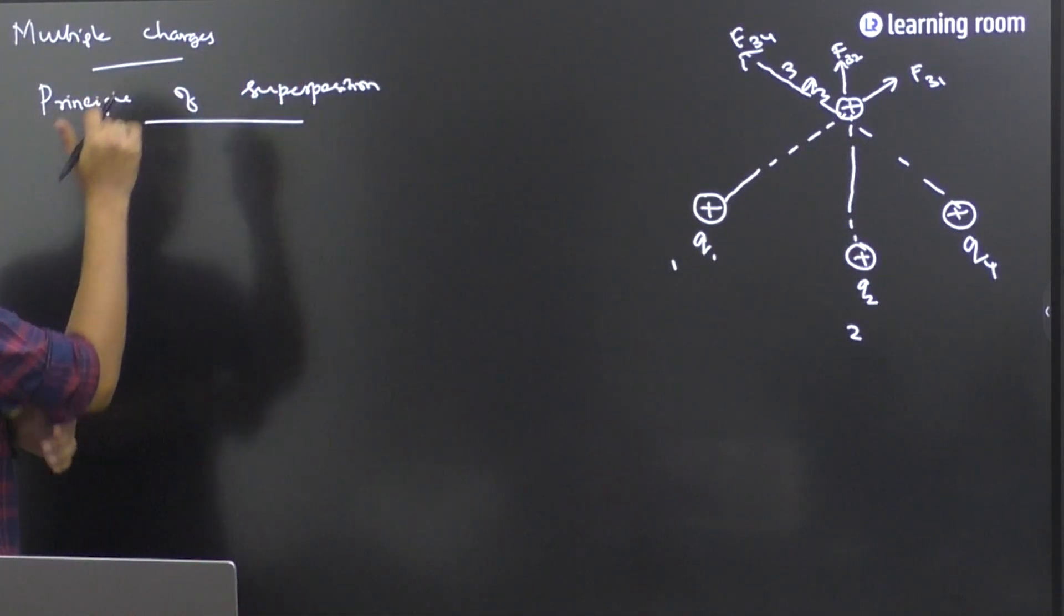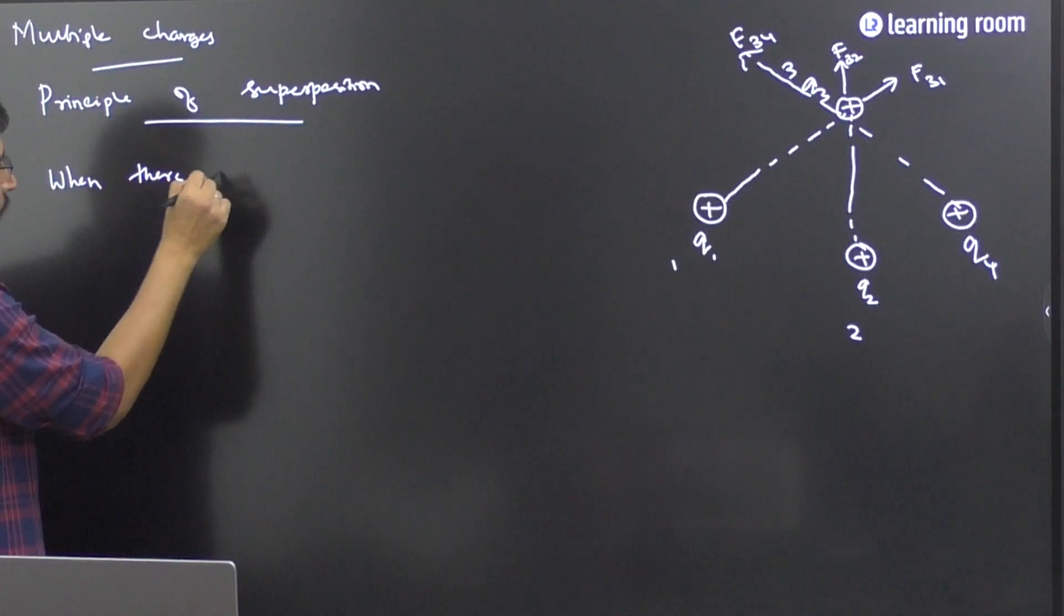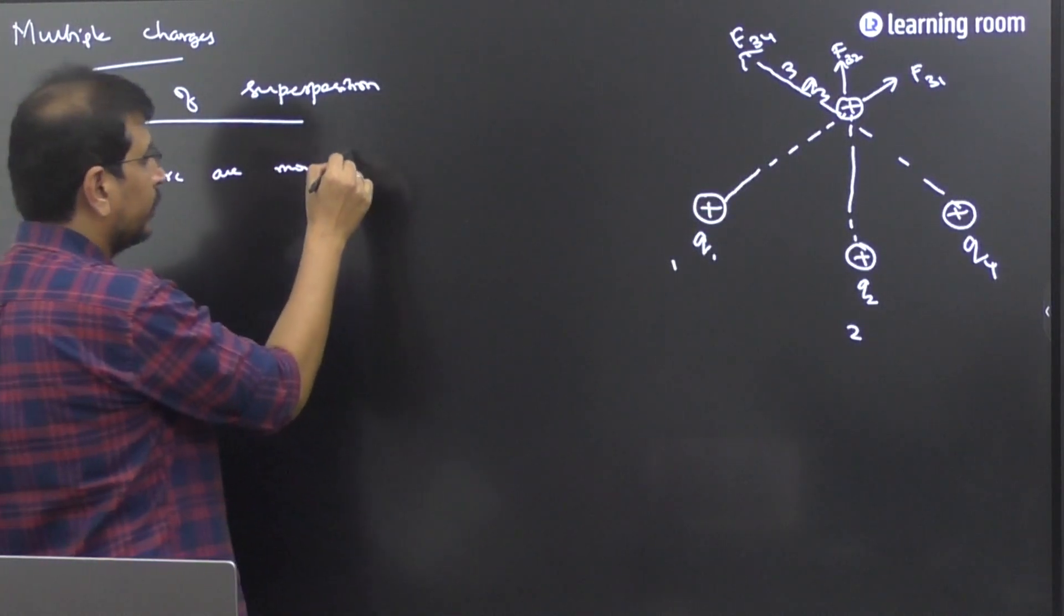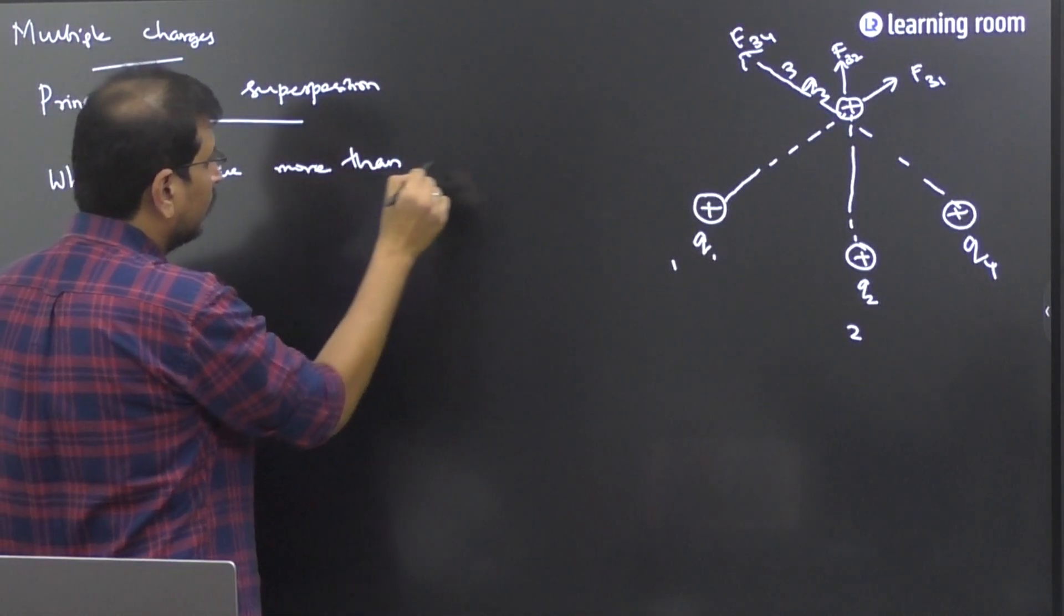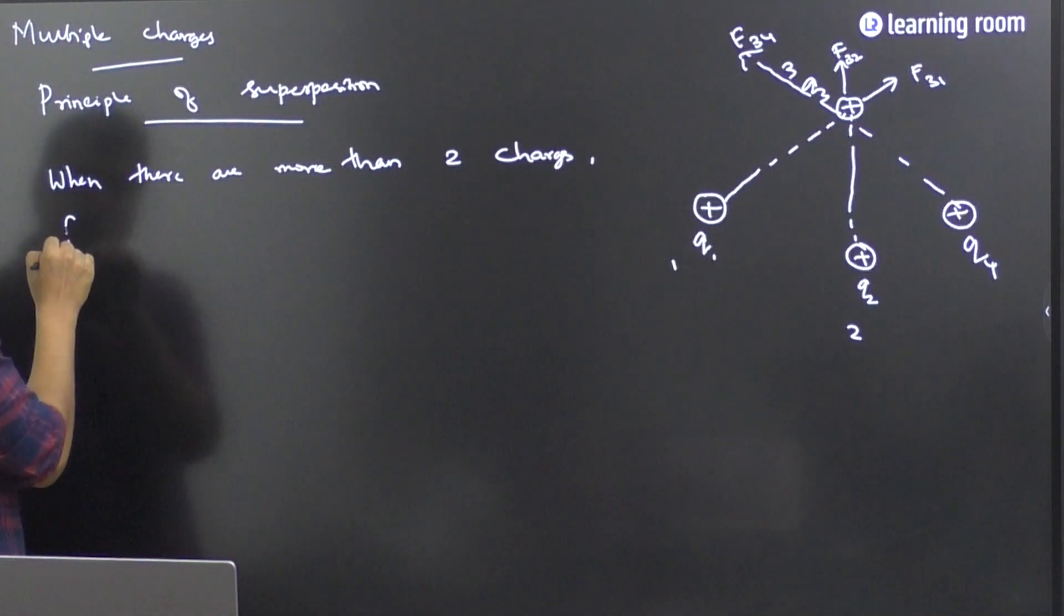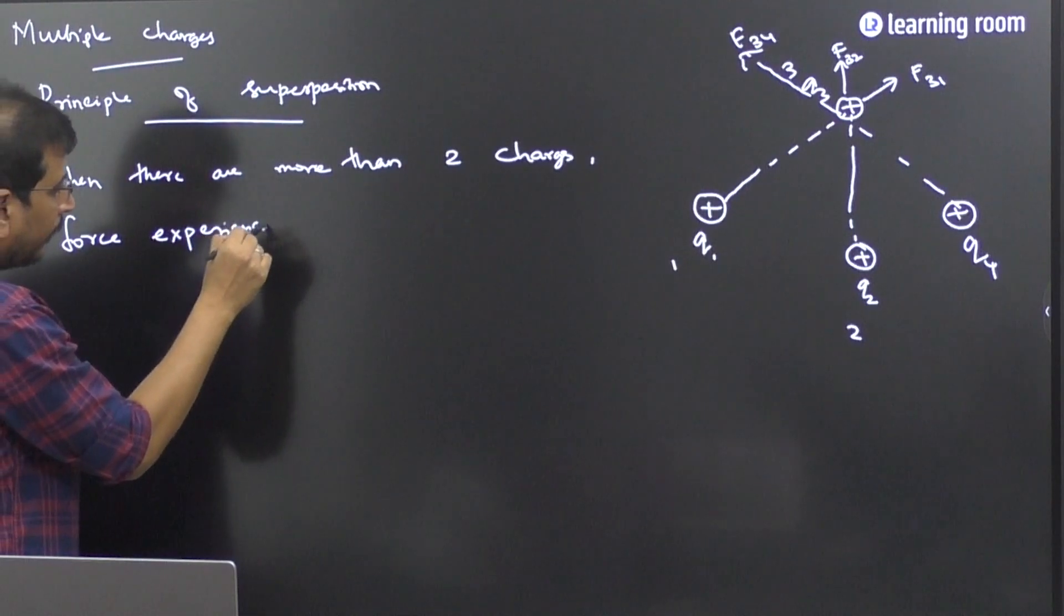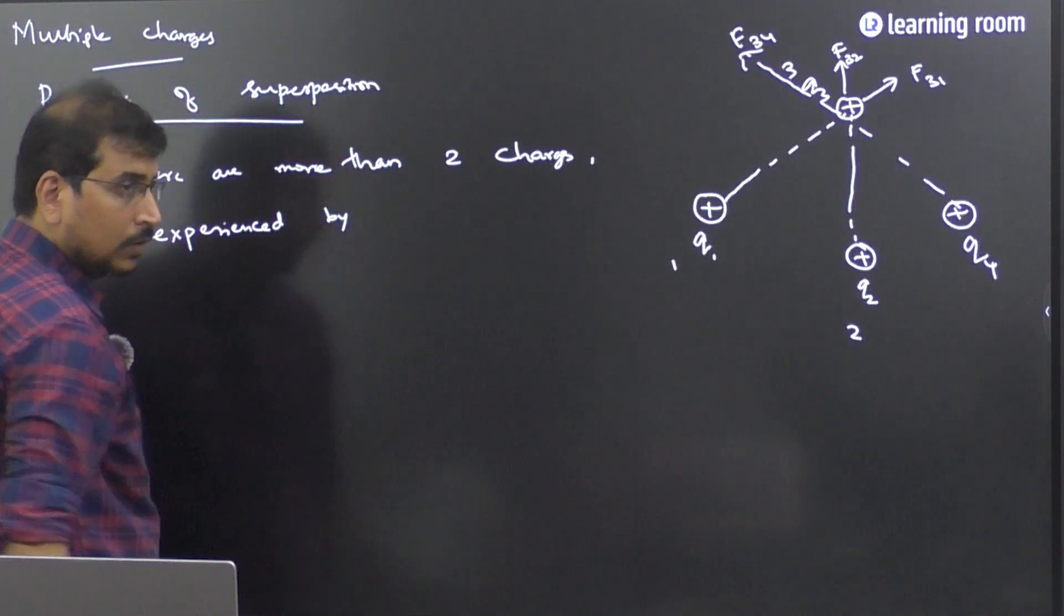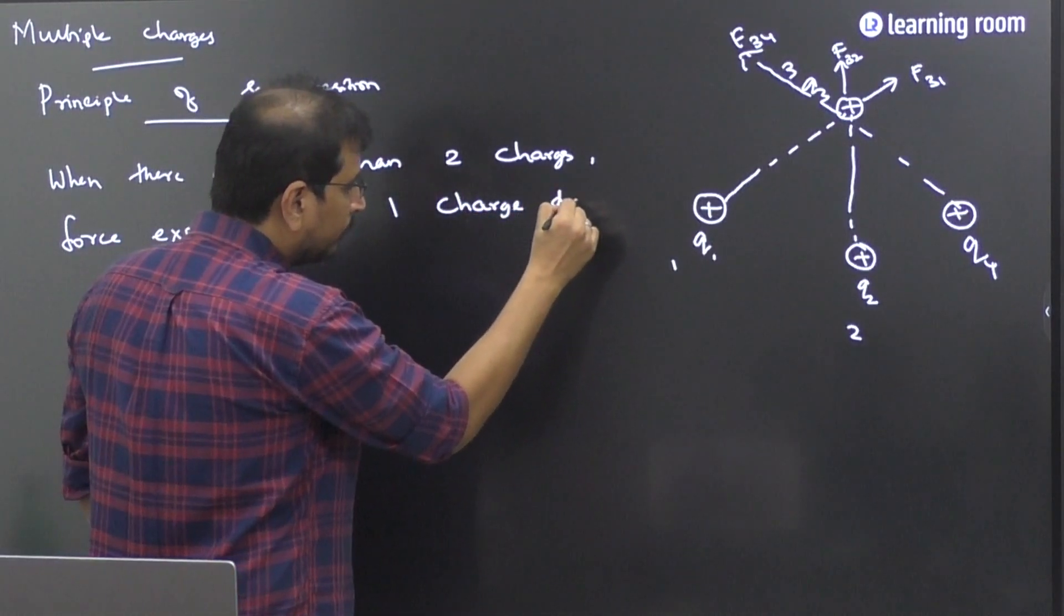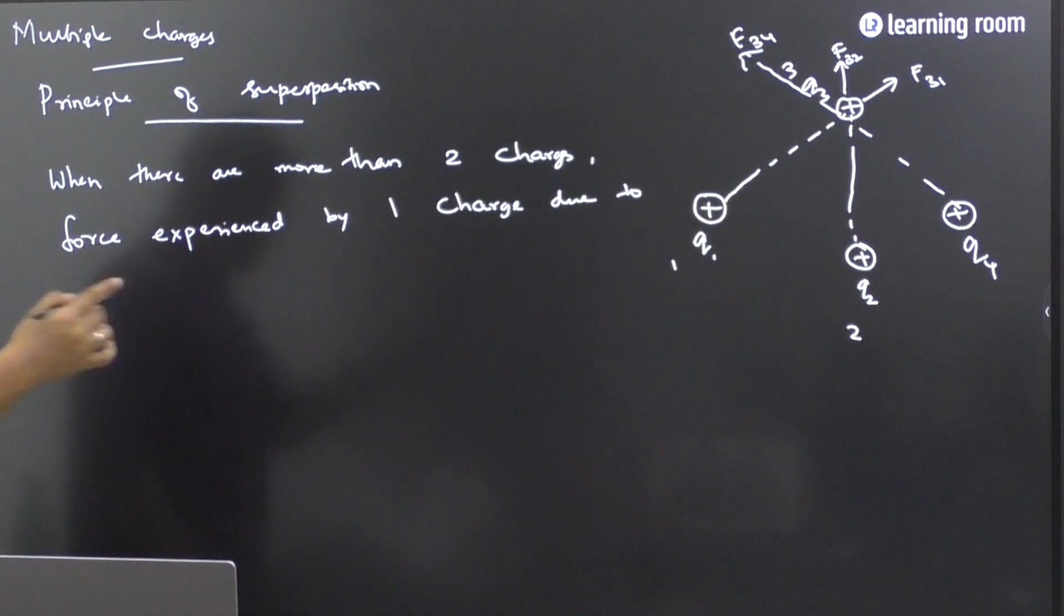So what does it state? When there are more than 2 charges, force experienced by 1 charge due to whom? Due to the remaining system.